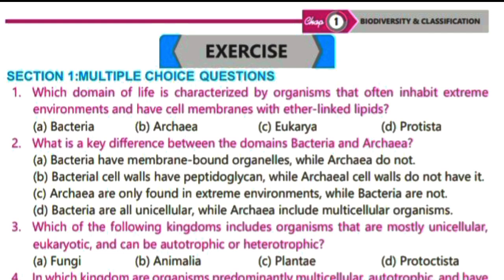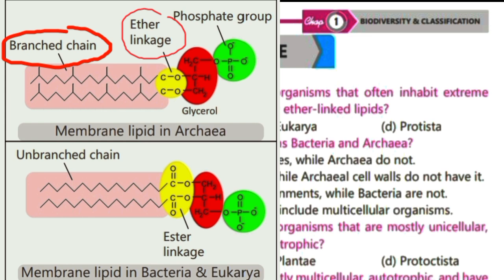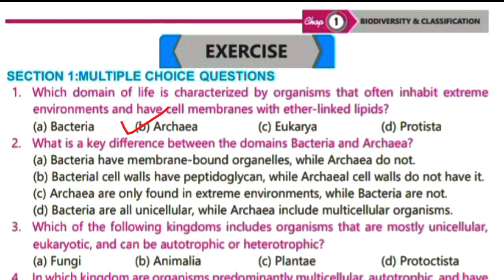You have studied in the unique features of domain Archaea that their cell membrane contains lipids with ether-linkage between glycerol and fatty acid chains. These fatty acid chains are branched, which is why their cell membranes are more resistant to extreme conditions. Bacteria and Eukarya have ester-linkages in their cell membranes. So B is the right option — Archaea.